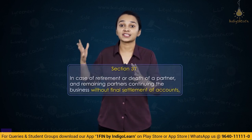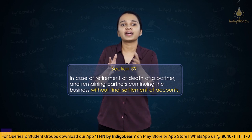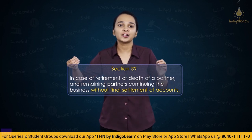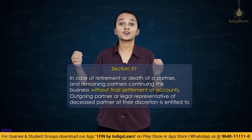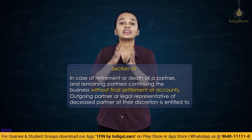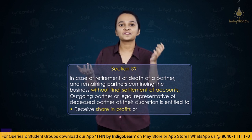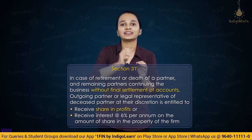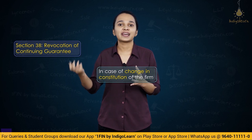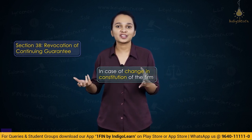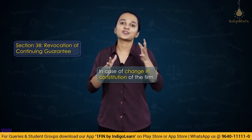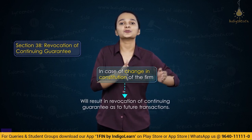Section 37 — if a partner has died or retired and without final settlement the business is being continued, the retired partner or legal representatives of the deceased partner are entitled to either receive a share in profits or receive interest at 6% per annum on their share in the partnership. Section 38 — revocation of continuing guarantee. A change in constitution of the firm — death, retirement, or introduction of a partner — leads to revocation of continuing guarantee with respect to all future transactions. Transactions already done are still covered, but the guarantee is revoked for future transactions.